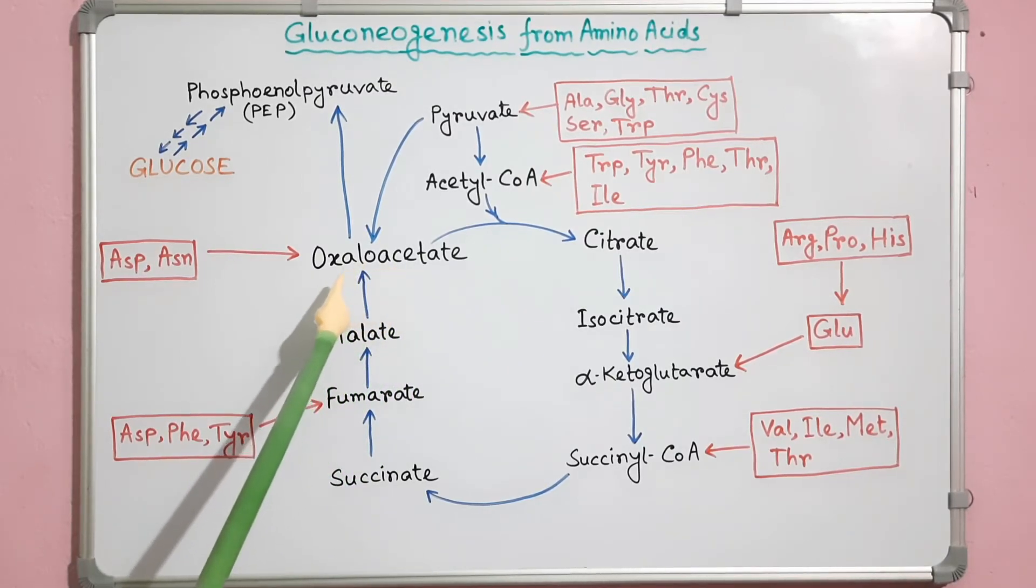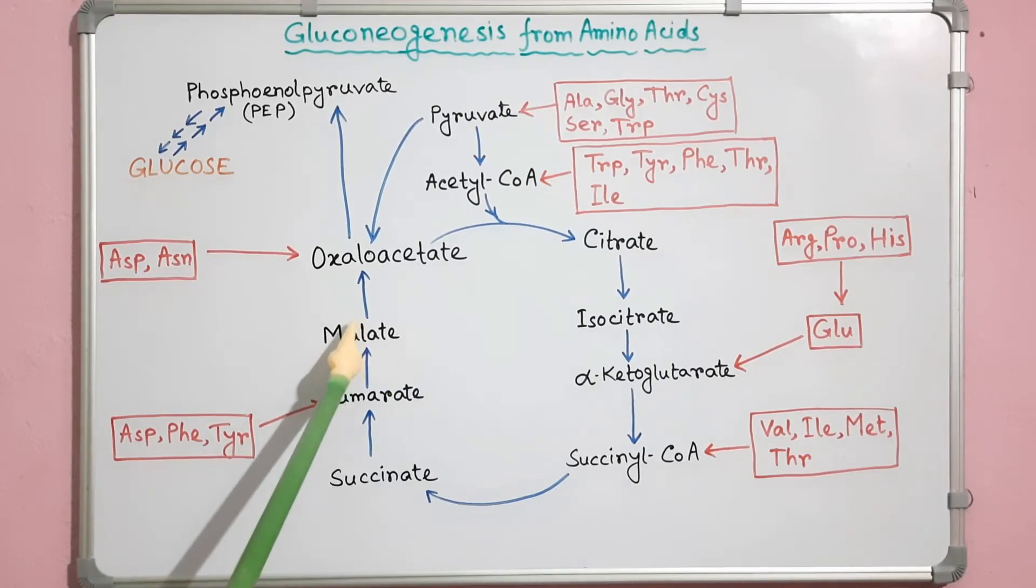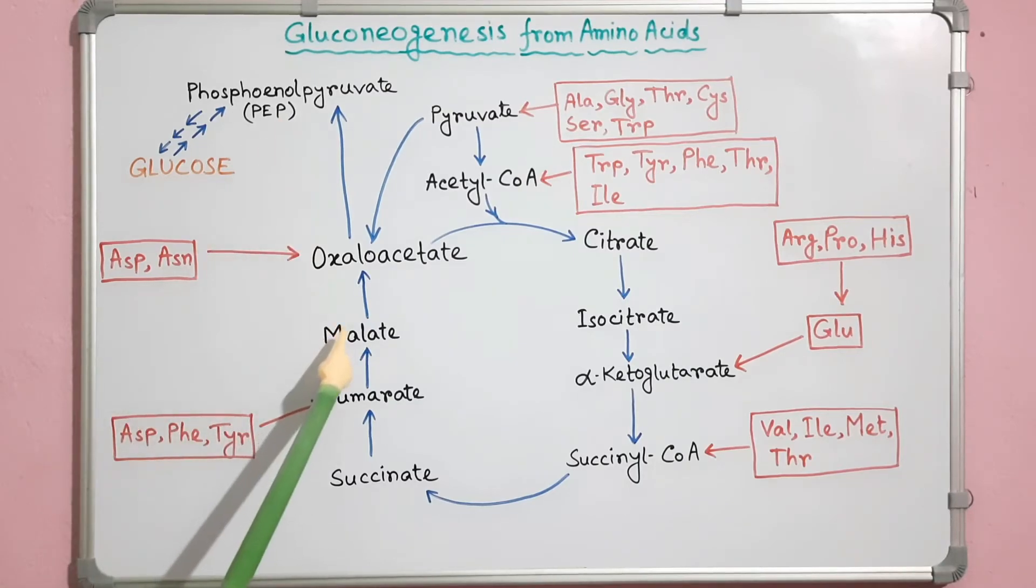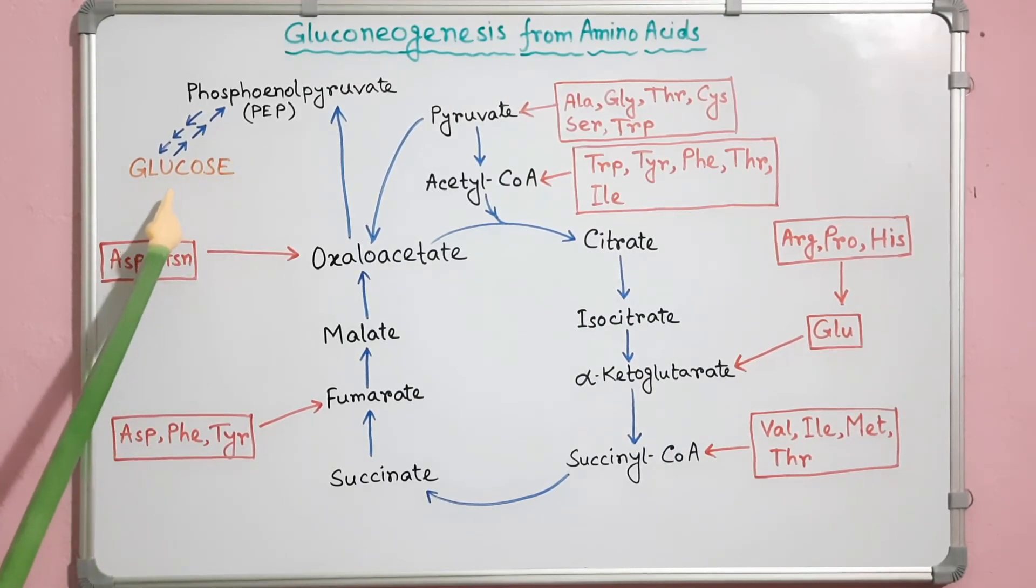In mitochondria, oxaloacetate is then changed to either malate or phosphoenolpyruvate. Malate and phosphoenolpyruvate are transferred to the cytosol and changed to glucose.